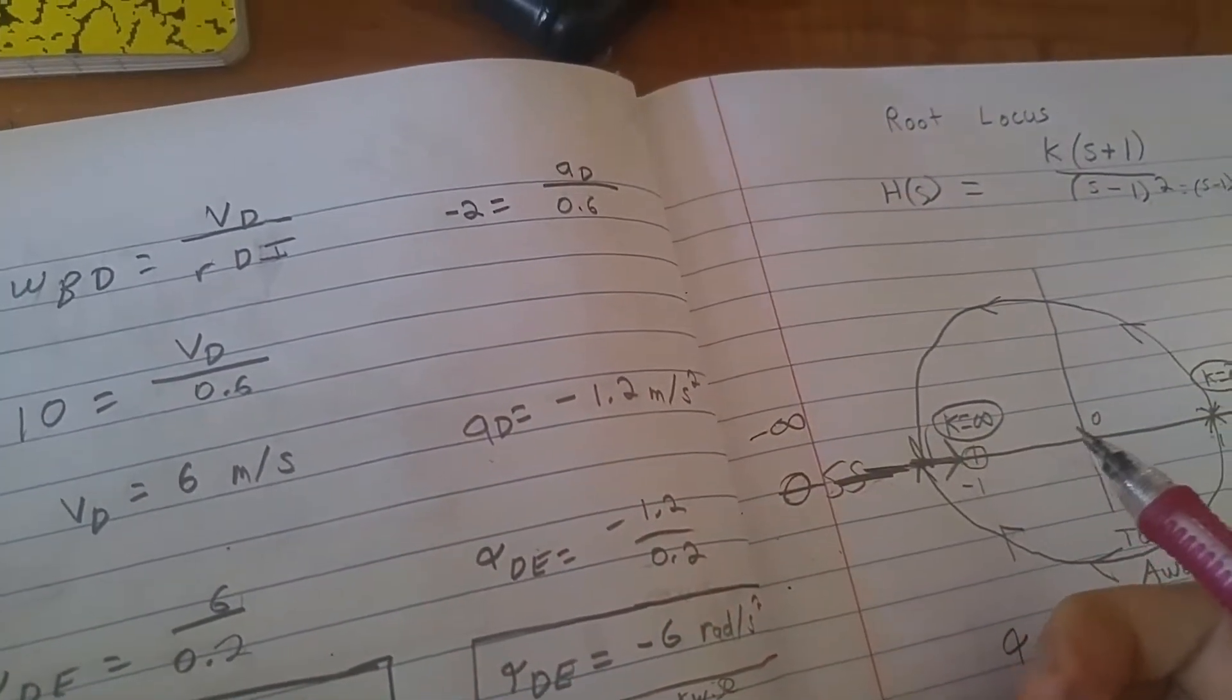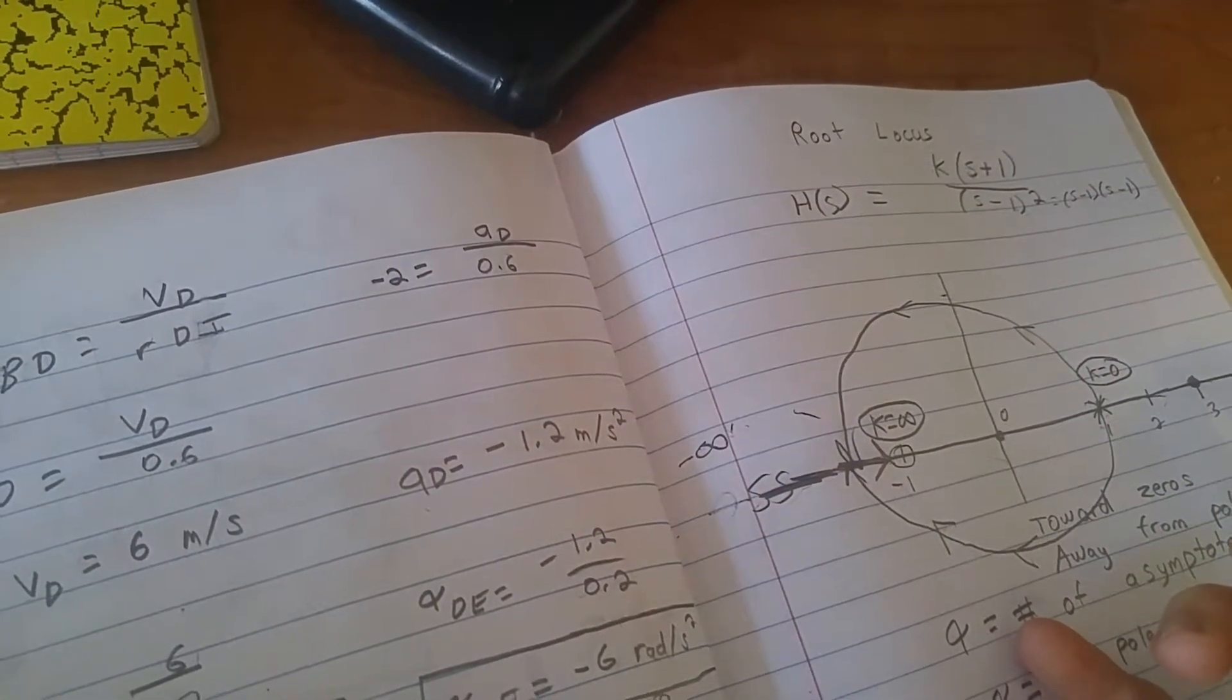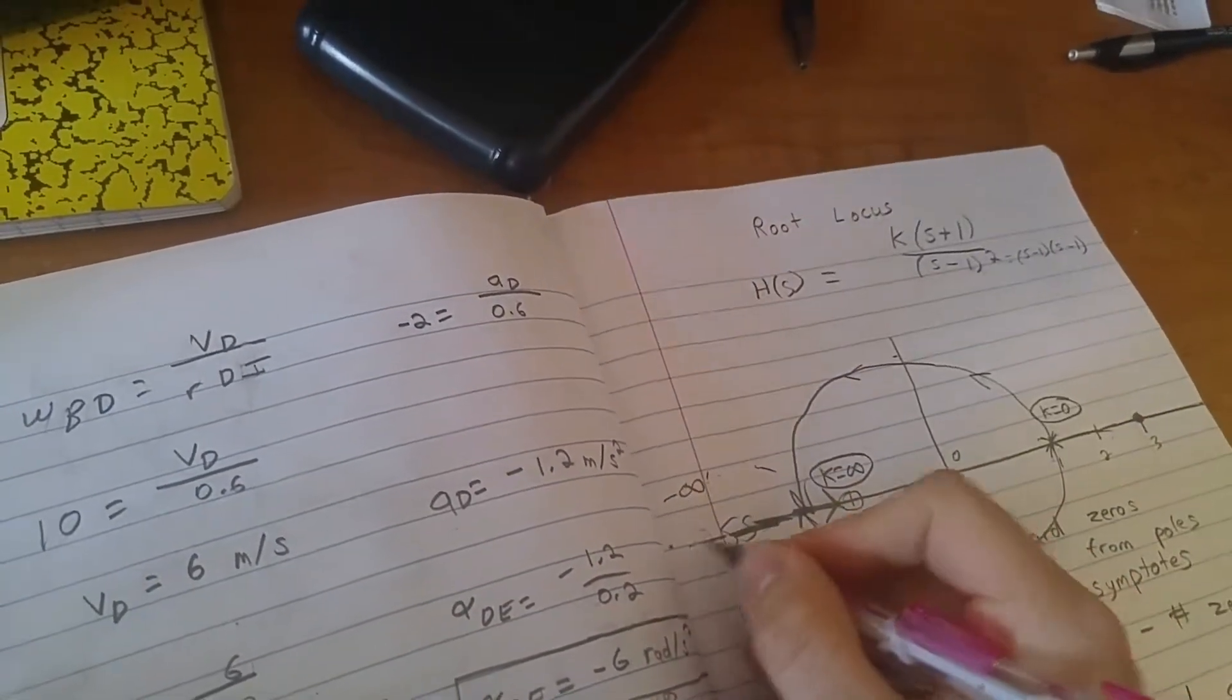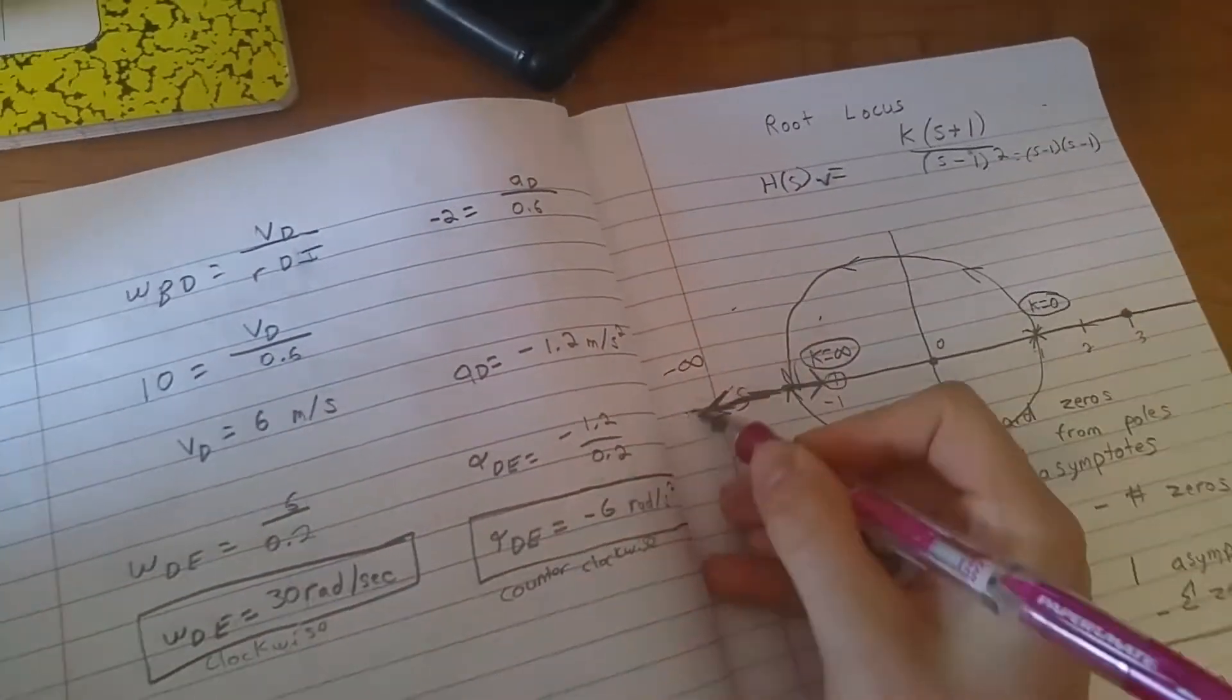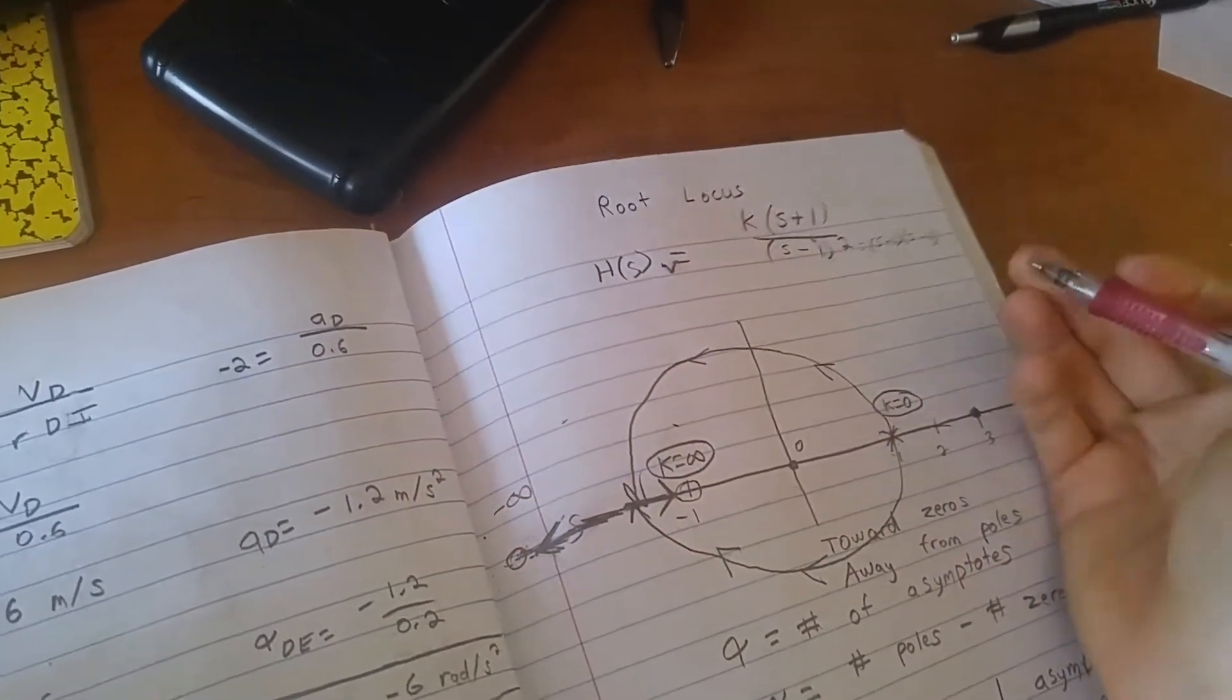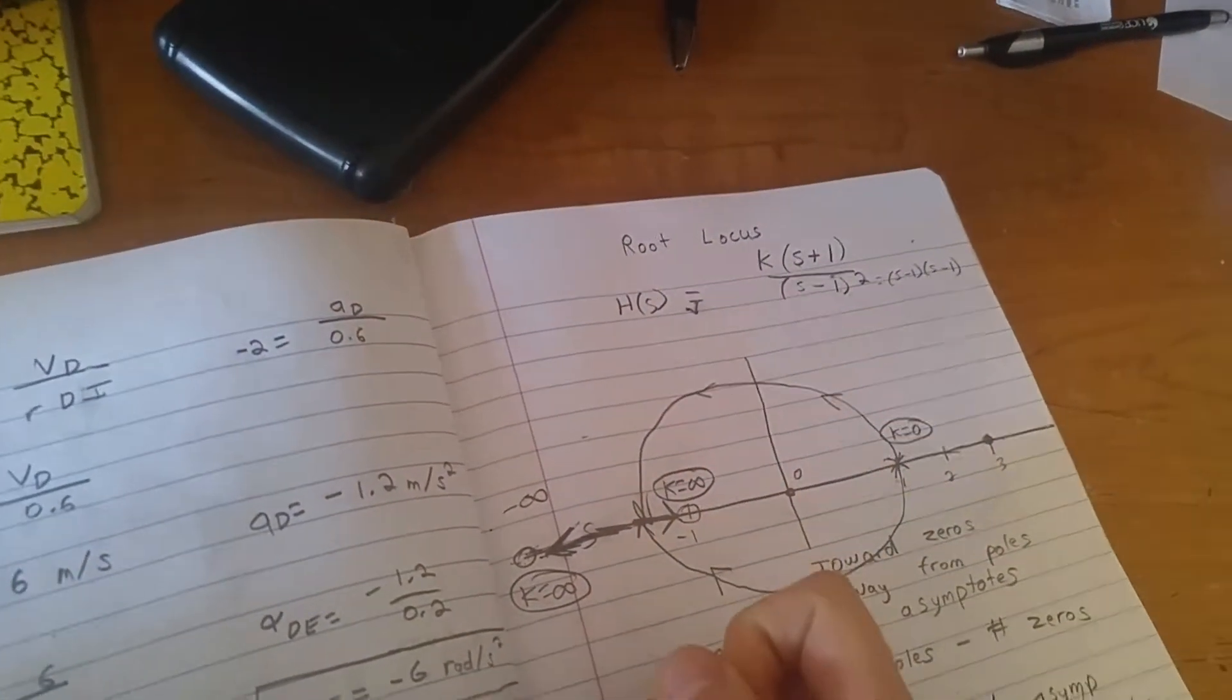So the root locus... Sorry, that's a pole at negative infinity. My bad. From the poles... No, it's a zero. It's a zero. Sorry. That's a zero at minus infinity. And the reason it's a zero is because if I plug in infinity here for s, then it's going to approach zero. Yeah. Which means that at this point, k should be equal to infinity. And that's my root locus.